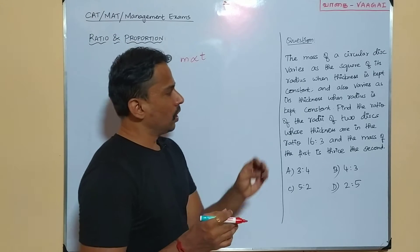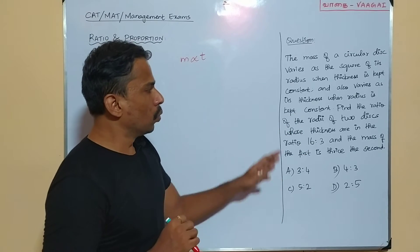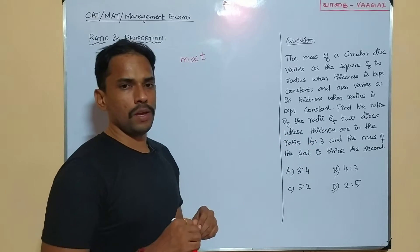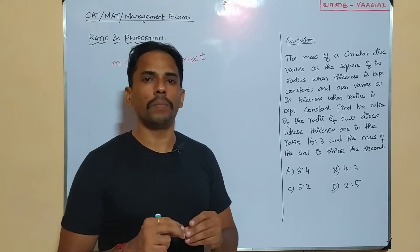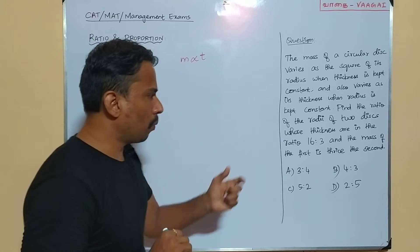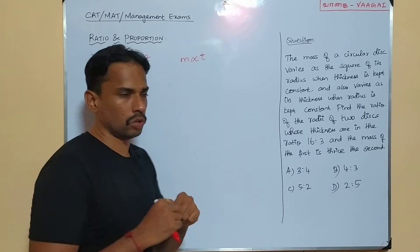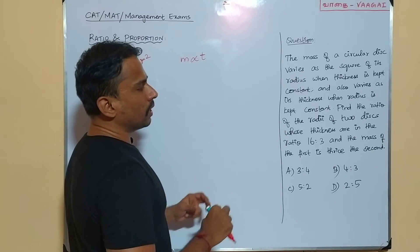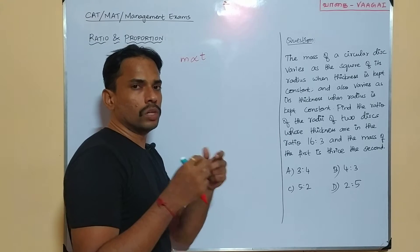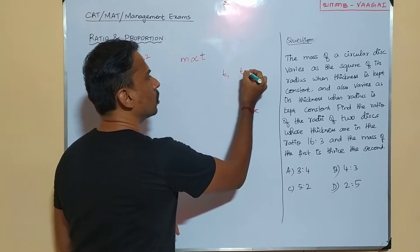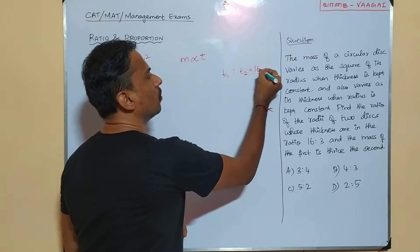Now, continuing the question: find the ratio of the radii of two disks, given that their thicknesses are in the ratio 16 is to 3 and the mass of the first one is thrice the second. So there are two disks being compared. Let me notate the thickness of the two disks as T1 and T2. So T1 is to T2 is equal to 16 is to 3.